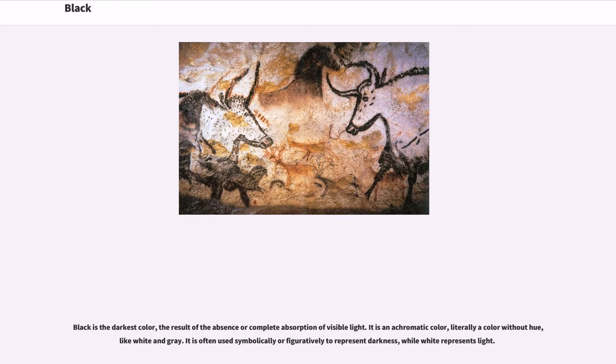Black is the darkest color, the result of the absence or complete absorption of visible light. It is an achromatic color, literally a color without hue, like white and gray.